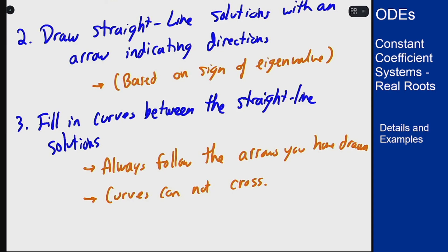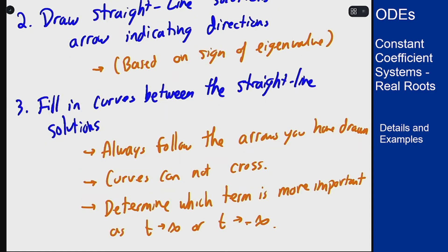The big things to keep in mind are that you always have to follow arrows, curves cannot cross, and you'll need to use the value of the eigenvalues themselves to figure out which term is more important to determine which curve you should approach as you go to infinity or minus infinity.